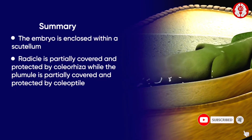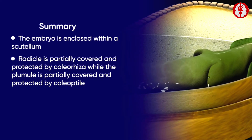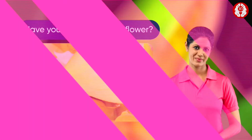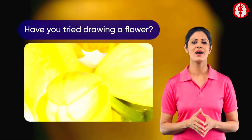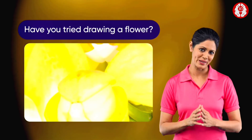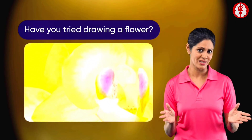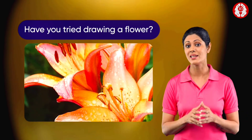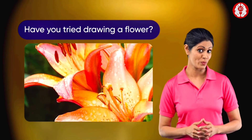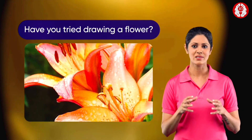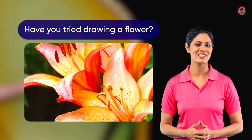The embryo consists of a radicle and a plumule. The radicle is partially covered and protected by the coleorhiza, while the plumule is partially covered and protected by the coleoptile. Flowers are complicated and display a wide diversity in their adaptations and modifications, which means there is still plenty to learn, so let's continue exploring.